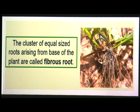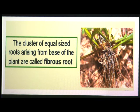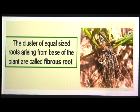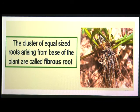Fibrous roots replace the tap root. The tap root is short-lived and is replaced by a cluster of thin, fiber-like roots. In some plants, a bunch of thin fiber-like roots arise from the base of the stem. Unlike tap roots, fibrous roots have no main or lateral roots — just a cluster of many equal-sized roots arising from the base. These are called fibrous roots.